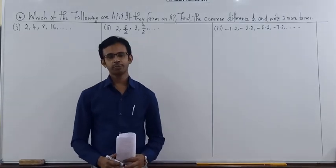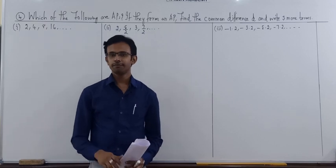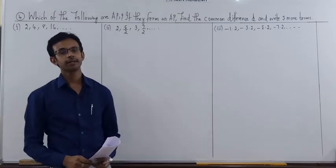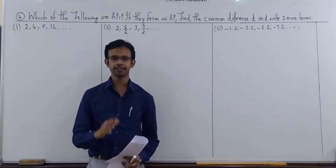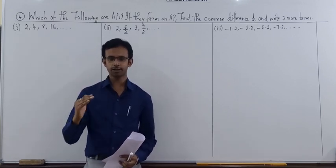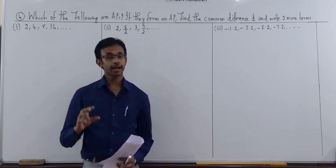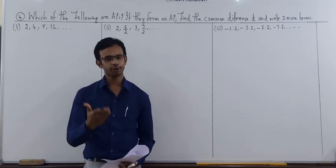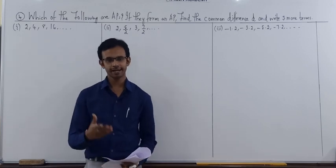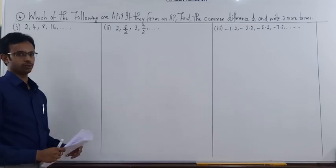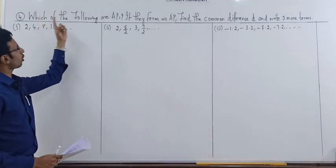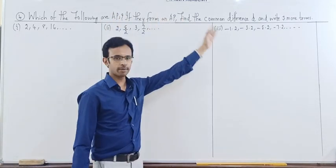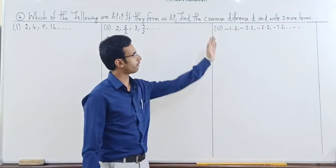Hi viewers, let's start with the continuation of the previous session. We completed three mains in the last session. In this session we are going to target the fourth main of arithmetic progression. It says: which of the following are APs? If they form an arithmetic progression, you need to find the common difference d and also write three more terms followed after the given set of numbers.